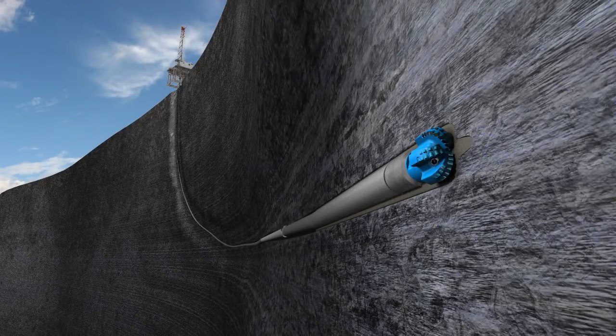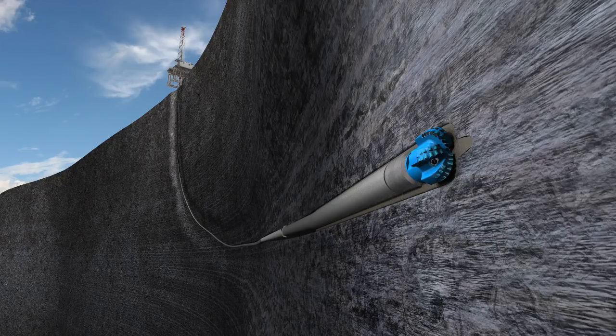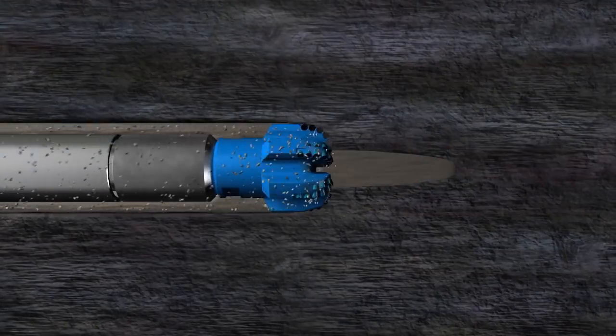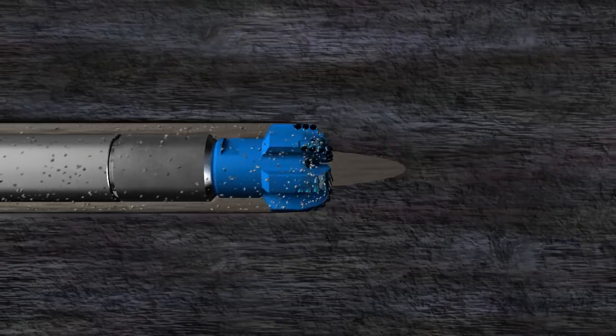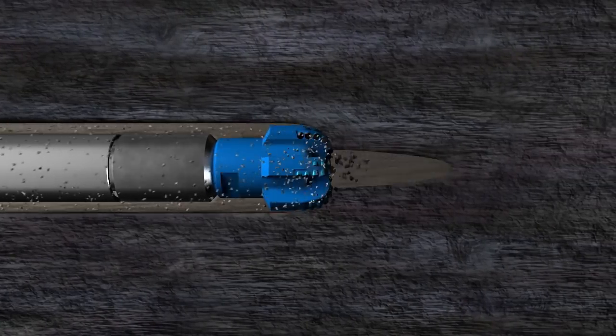The HyperDrill downhole tool combines conventional steerable drilling with an internal hypervelocity barrel called HyperCore. It shoots dense projectiles every few seconds where they impact just ahead of the rotating bit.